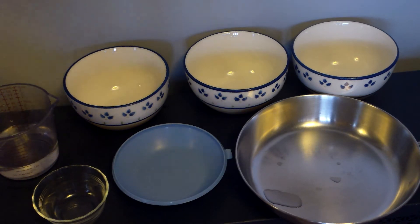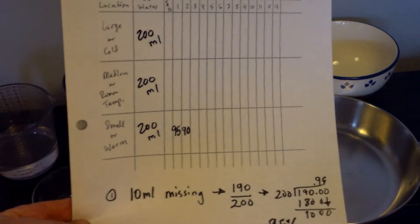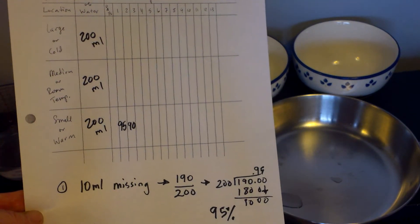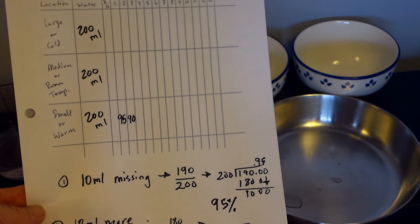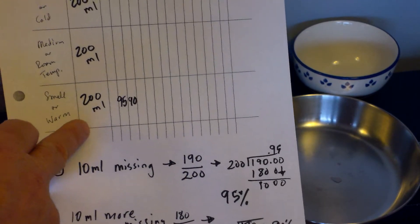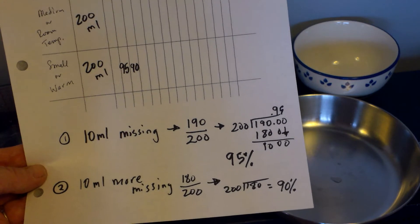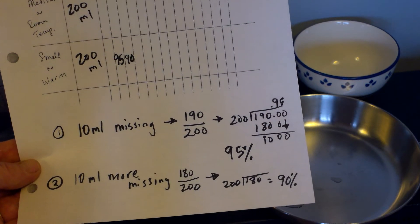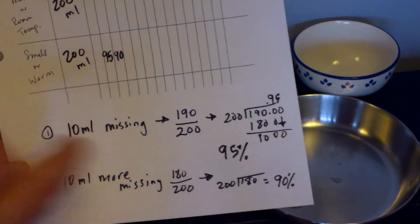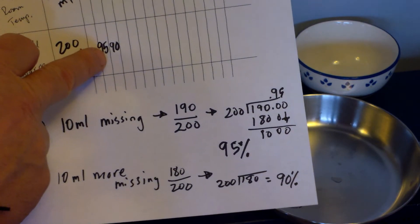With regard to the paperwork, it isn't as bad as it looks. The first thing you're going to do is record the quantity of water — 200 milliliters in each one. The evaporation fraction and percent aren't as complicated as they look. For example, on the first day in the warm area, if you have 10 milliliters of water missing, you started with 200 and now have 190. Divide 190 by 200 and you get 95 percent — that goes in for day one.